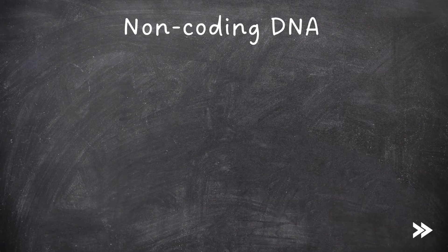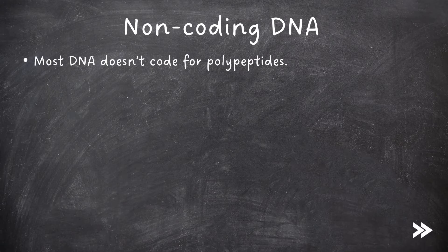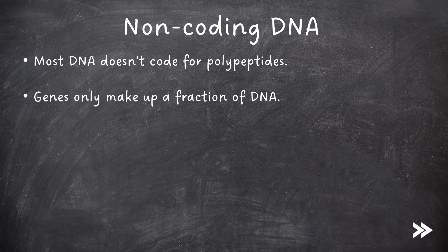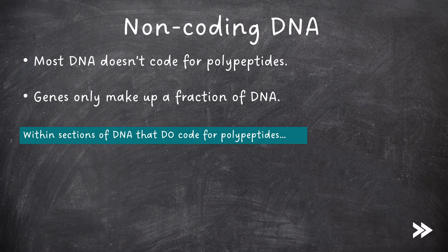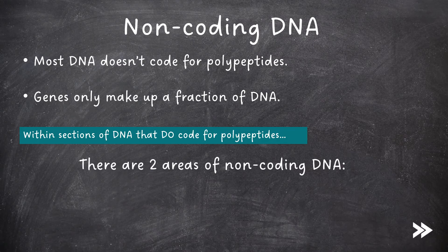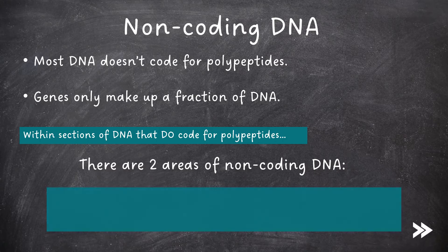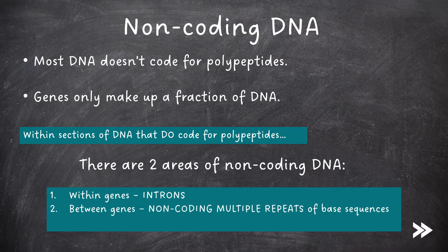Next, we need to consider non-coding DNA. Most DNA doesn't code for polypeptides at all — genes only make up a fraction of DNA. Within sections of DNA that do code for polypeptides, there are two areas of non-coding DNA: within genes there are introns, and between genes there are non-coding multiple repeats of base sequences.